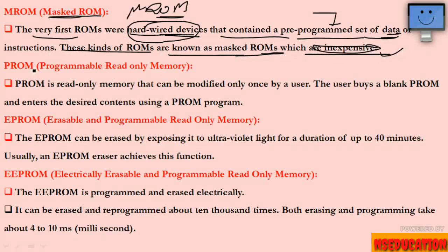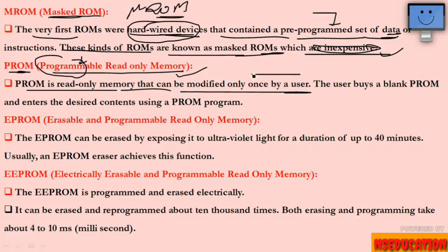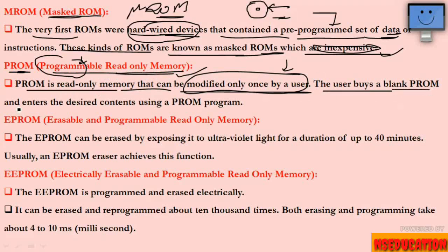Next is PROM — Programmable Read-Only Memory. This can be programmed, but only once by the user. PROM is read-only memory that can be modified only once by the user. After programming once, you cannot change it. An example is CD or DVD drives — once data is stored, it cannot be erased. The user uses a blank PROM and enters the desired content using a PROM programmer. For example, software like Nero was used to burn data onto CDs, after which it cannot be changed.